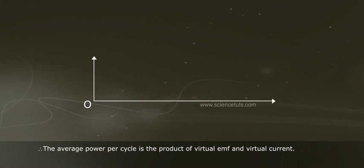Therefore, the average power per cycle is the product of virtual emf and virtual current.